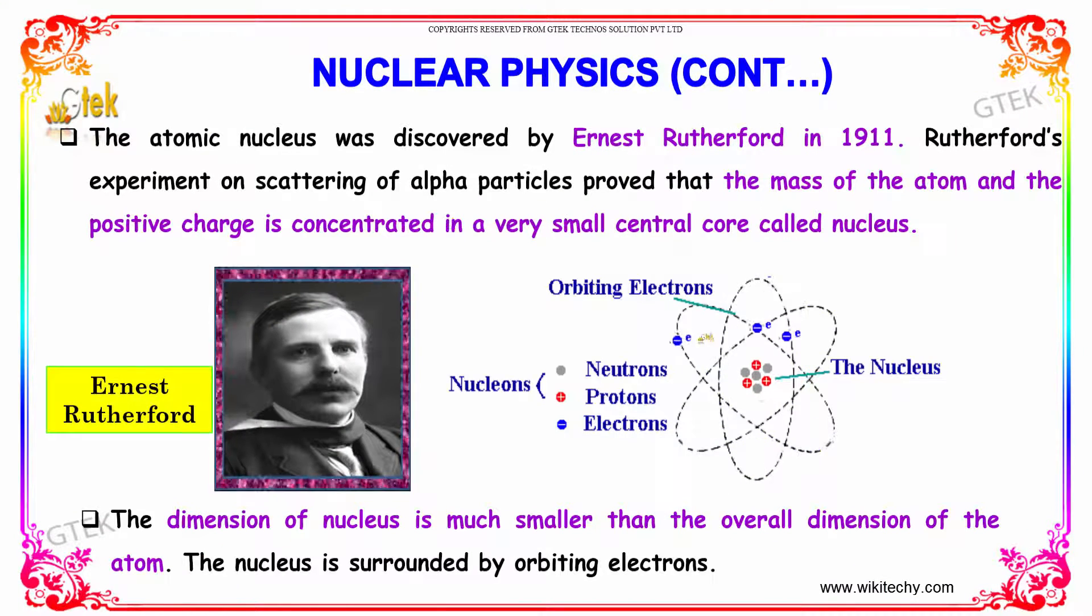Atomic nucleus was discovered by the great physicist and scientist Mr. Ernest Rutherford. In 1911, Rutherford's experiment on scattering of alpha particle proved that the mass of the atom and the positive charge is concentrated in a very small center core that's referred to as nucleus.